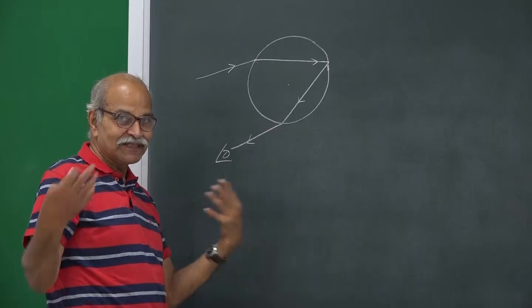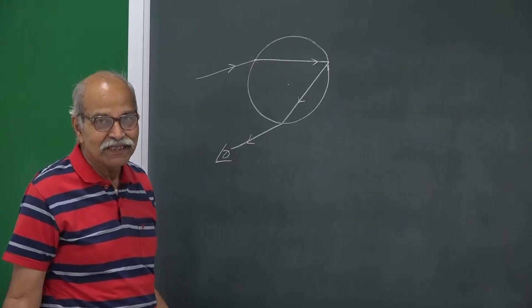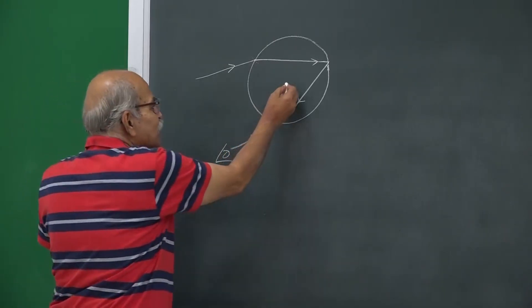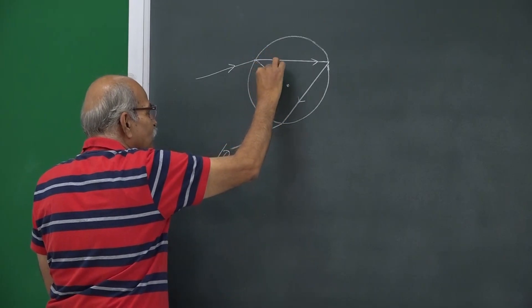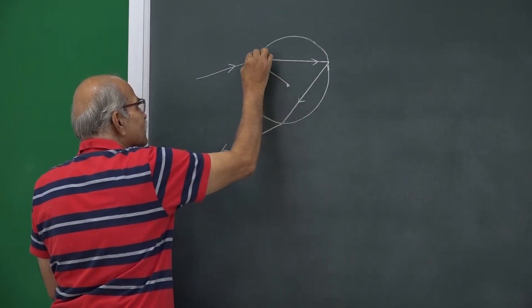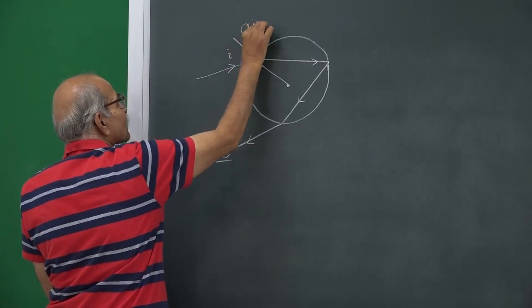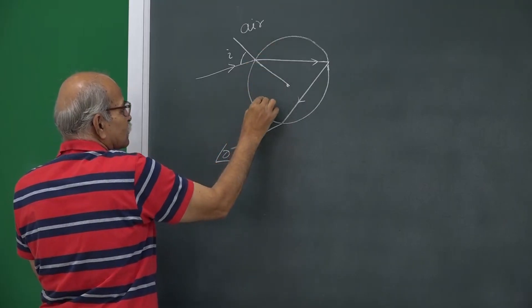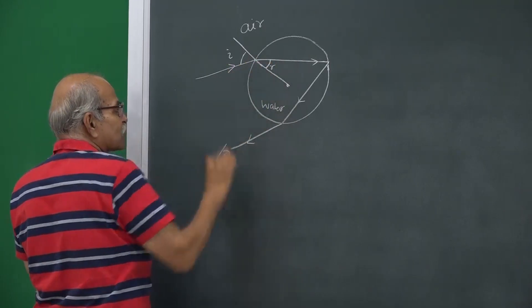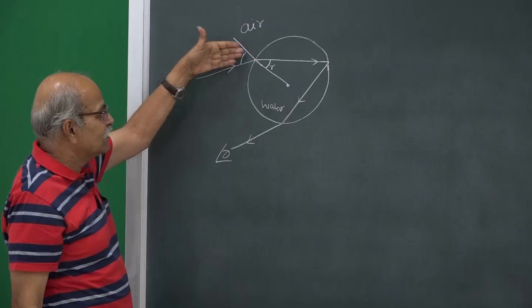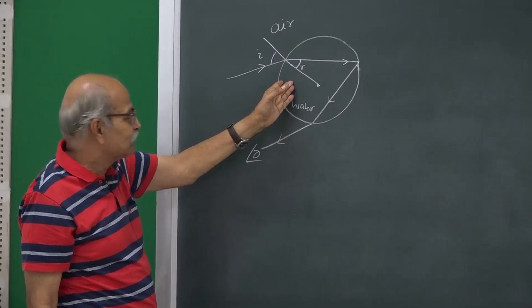This is extremely simple. If it is a spherical drop with center C, joining the center to the surface gives the normal. Here is the angle of incidence — this is air and this is water — and this is the angle of refraction r, where sin(i)/sin(r) equals the refractive index of water.